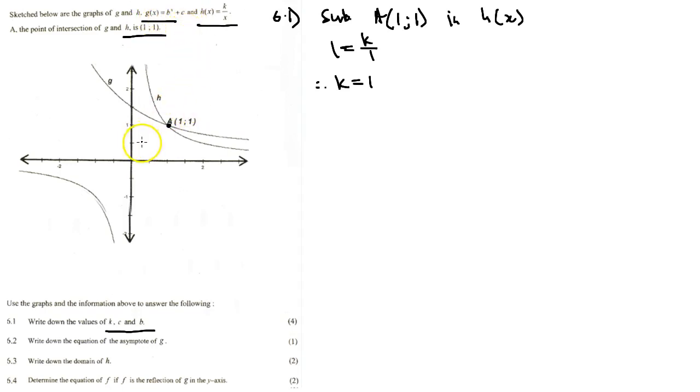However, if you look carefully you'll see that for g there is another coordinate that is given to us which is the y-intercept, between 1 and 2. That will be (0, 1.5). So we've got two coordinates.